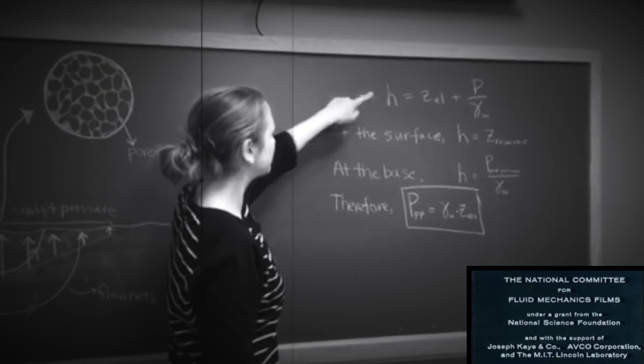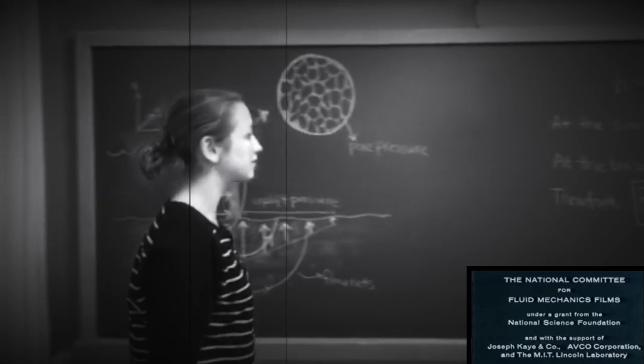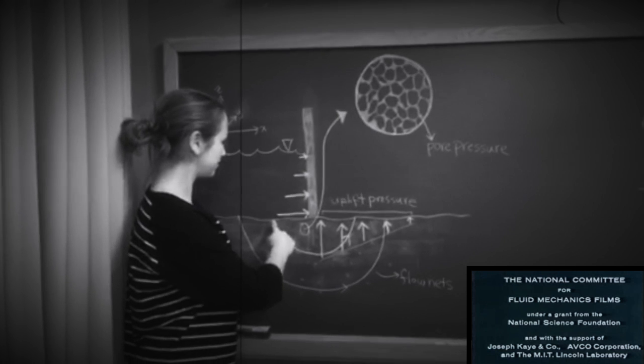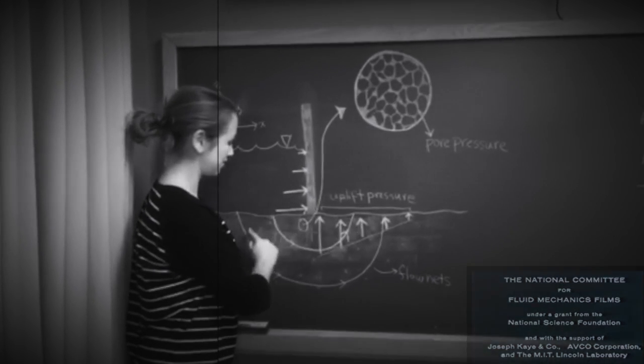In groundwater flow systems, potential is called hydraulic head, so flow is always perpendicular to lines of constant head, the equipotential lines in this case. The result is parabolic flow nets beneath the dam.